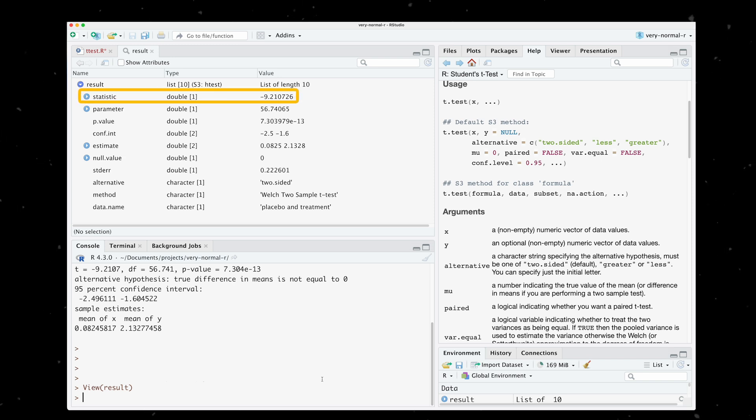The test statistic is stored within the statistic property of the list, so we can access it with a dollar sign or bracket notation. By running this, you can access this particular aspect of the list.